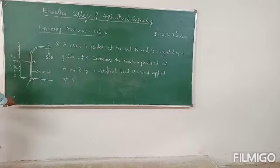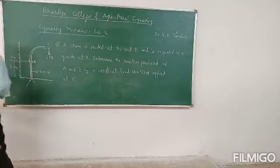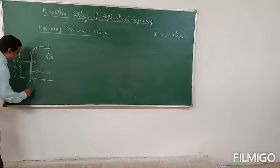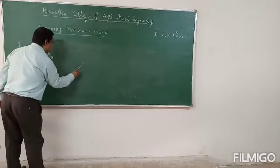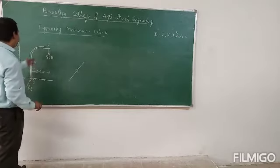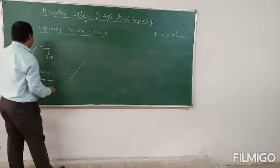And at B the reaction due to this pivot is at some inclined angle, and this angle can be found out with the help of RB. We have to find the reaction, so that angle we should find out.